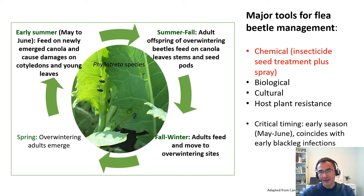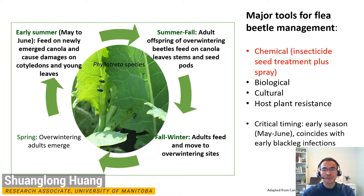On the other hand, we also know that the overwintering flea beetles, the Phyllotreta species, emerge and feed on different canola tissues, including cotyledons, leaves, stems, and seed pores. Similar to black leg, flea beetles can cause severe damages, and in extreme cases, plant fatality.